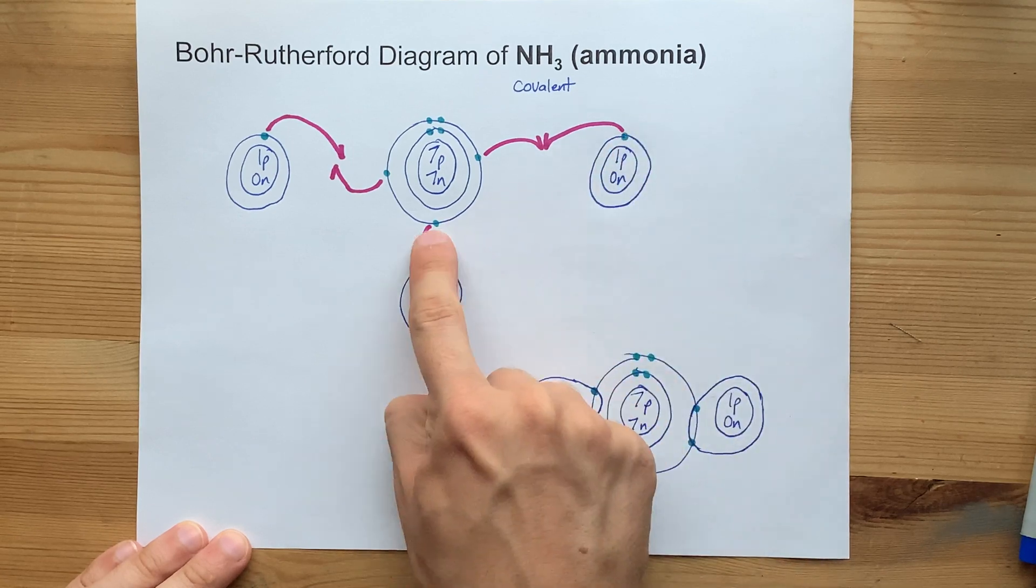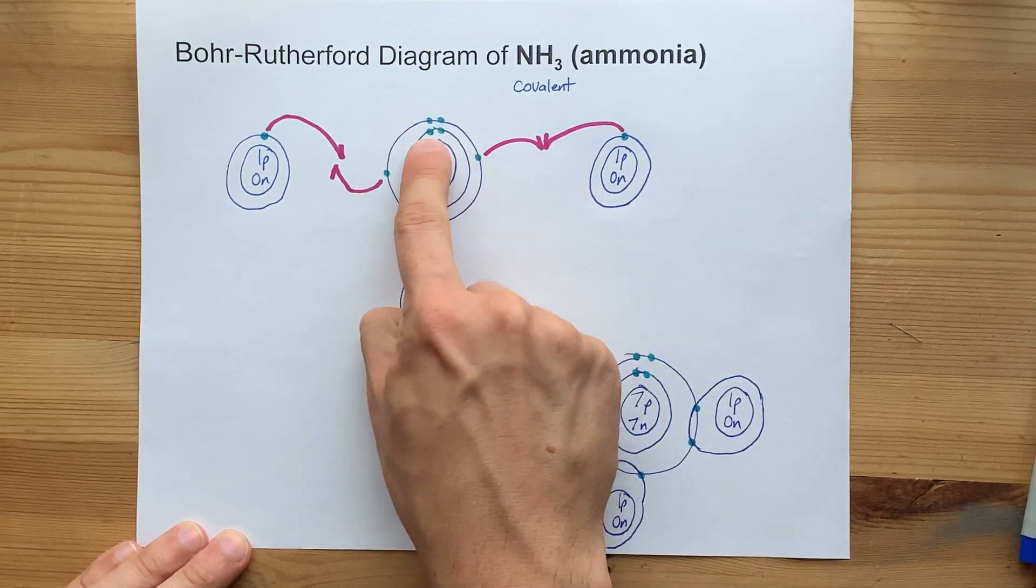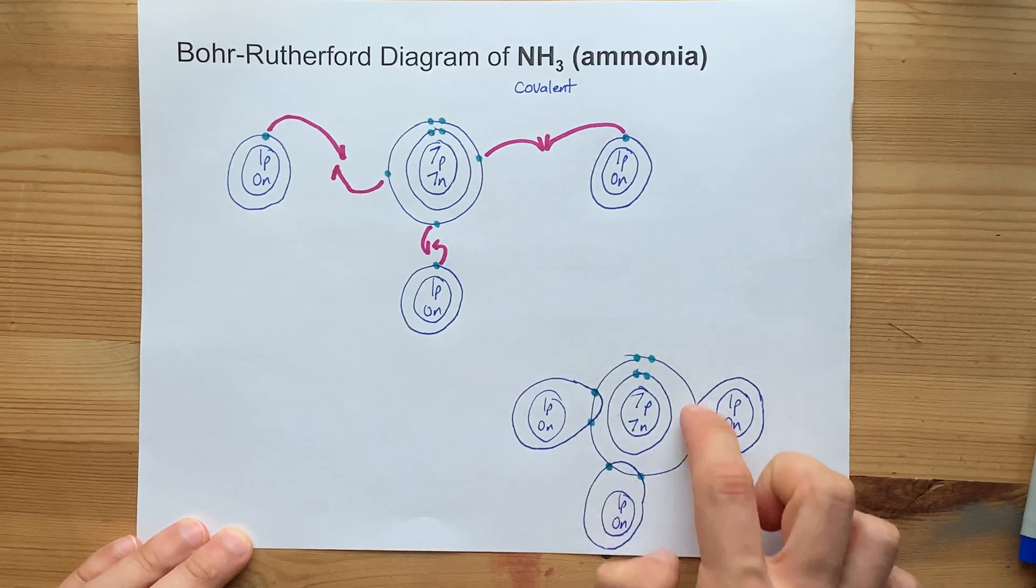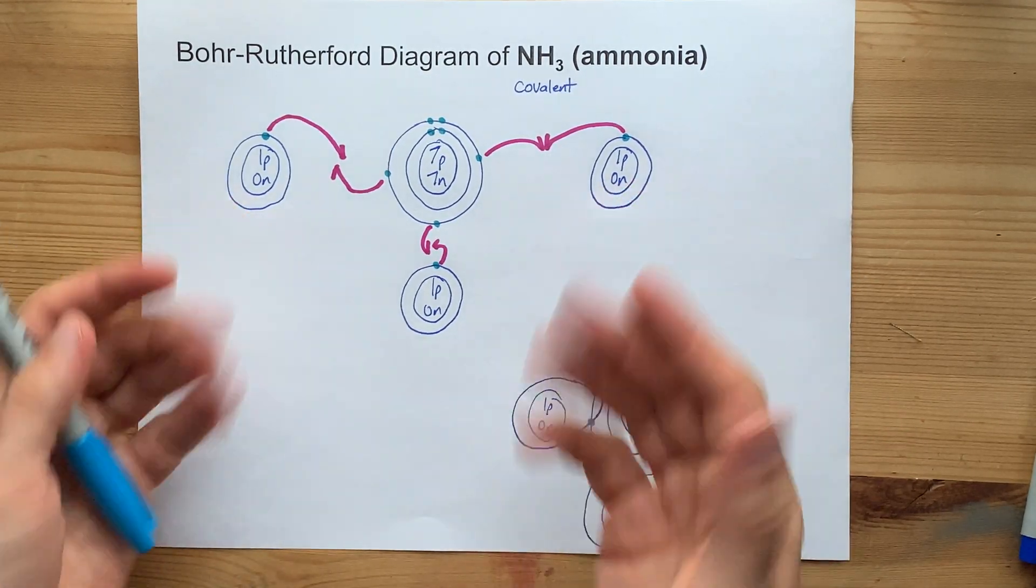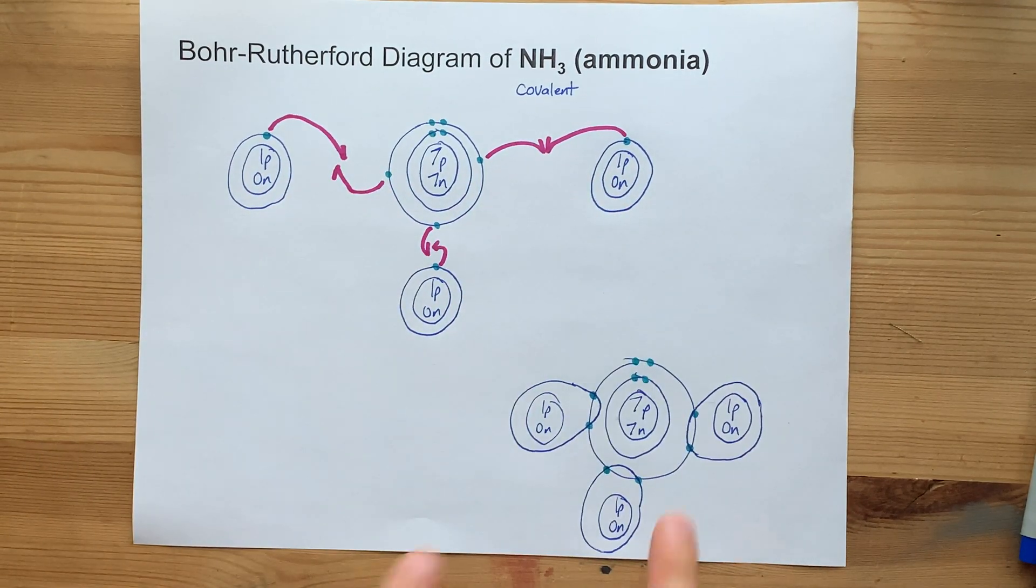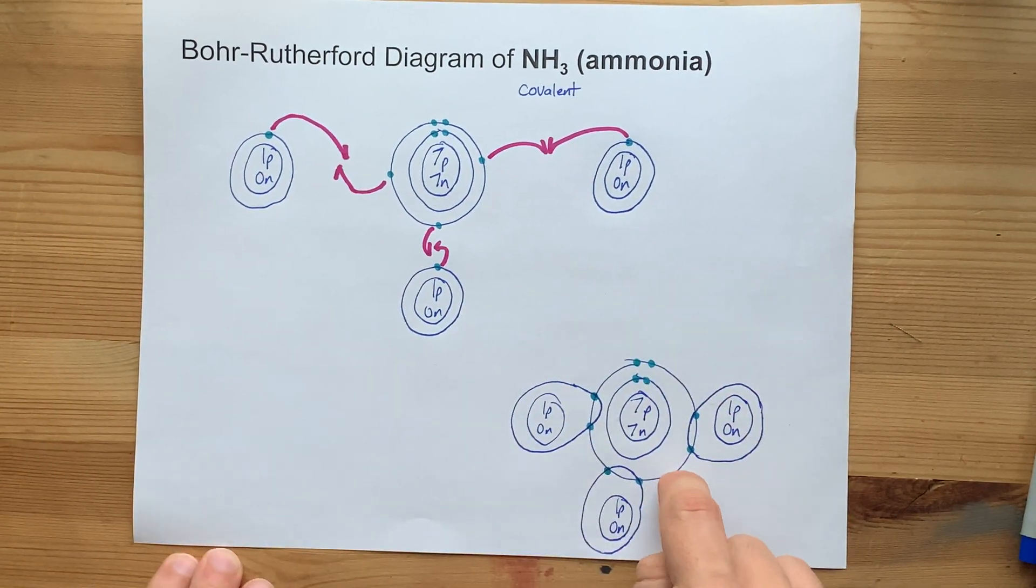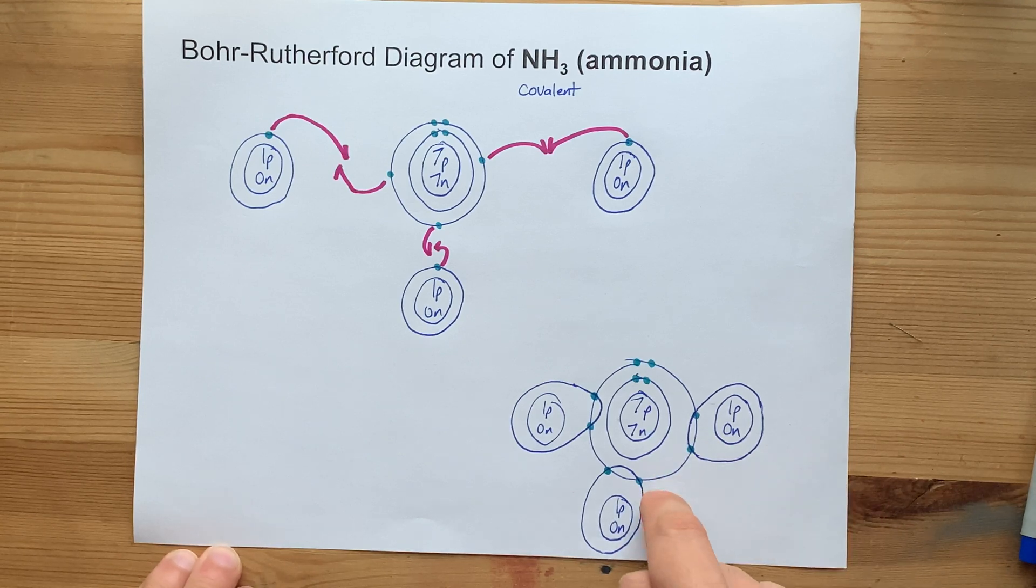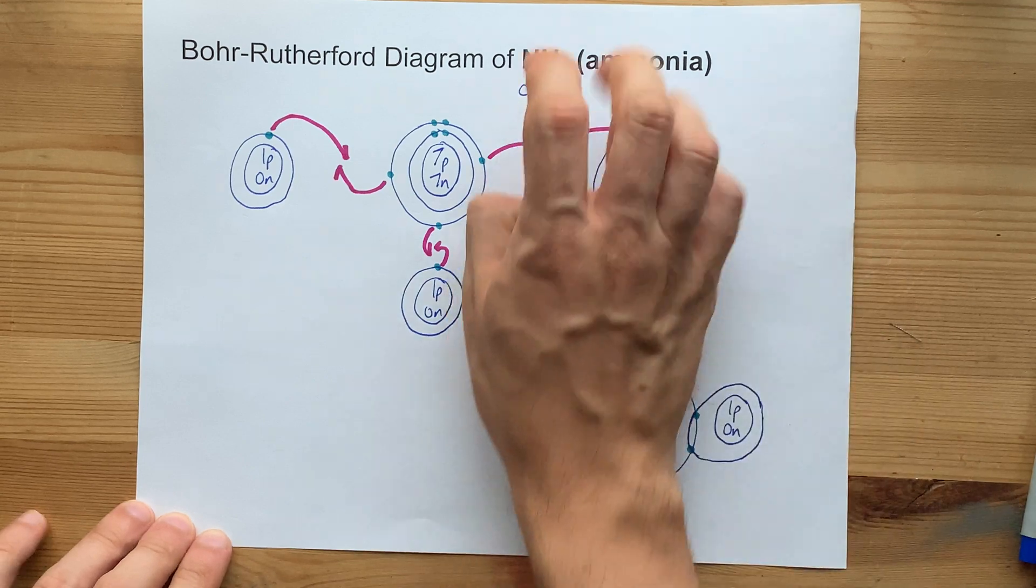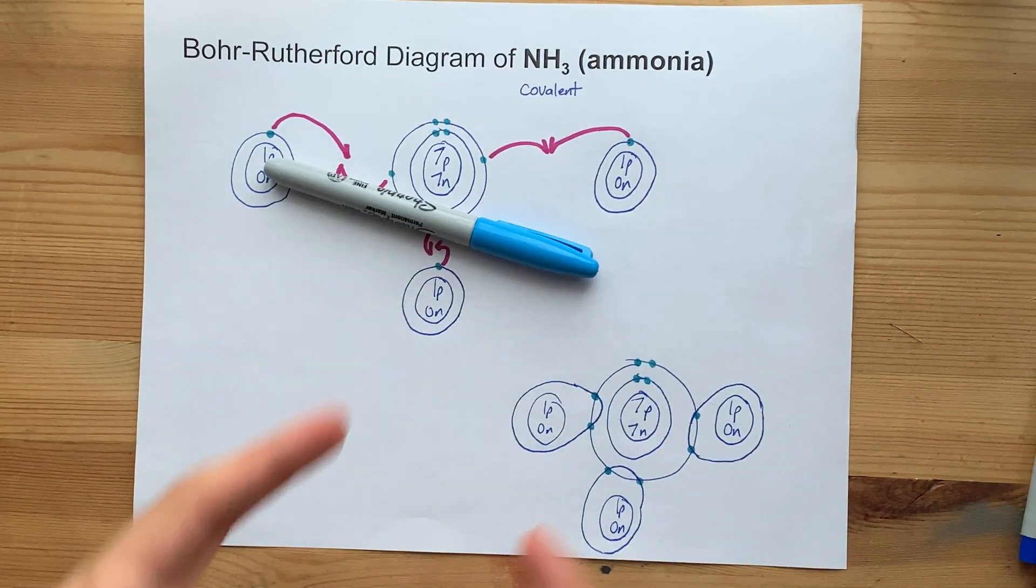Ten electrons total here. Ten electrons total here. This shows how the electrons are being shared. This is your final Bohr-Rutherford diagram for the compound of ammonia, NH3. Best of luck.